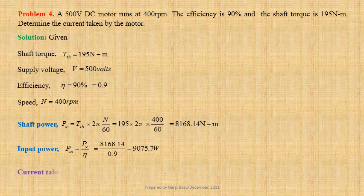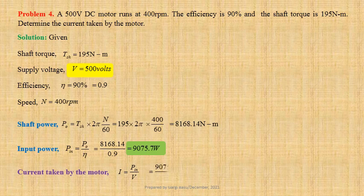Current taken by the motor: I equals P_in divided by V. Using values we get 9075.7 divided by 500, that is equal to 18.15 ampere.